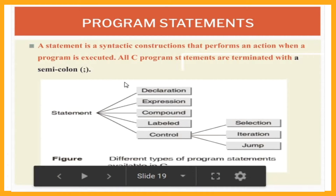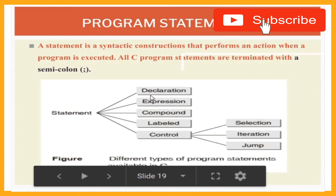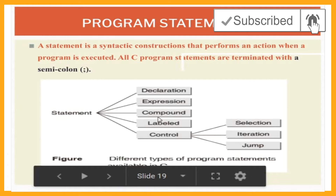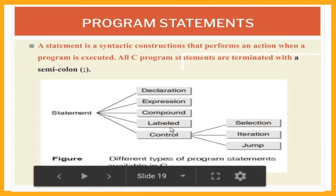In C, there are several statements available. If you look at this diagram, you can see how many statements are available in C language. The first one is declaration statement, expression statement, compound statement, labeled statement, and control statement. Under this control statement, there are three more: selection statement, iteration statement, and jump statement.